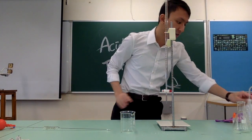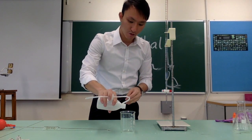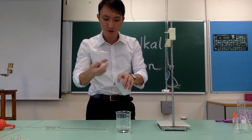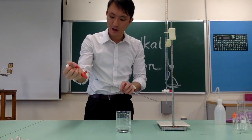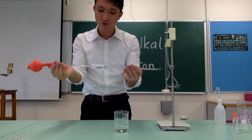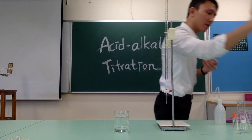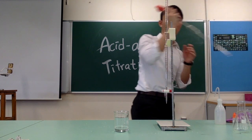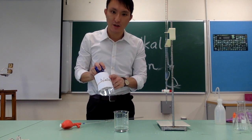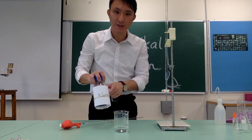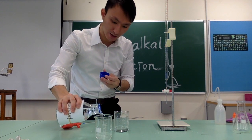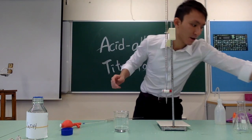Let's get started with the rinsing. First, take a beaker and add some distilled water. Roughly rinse the pipette, pour the distilled water out, then attach the pipette filler and suck up the solution. No need to add too much — gently roll the pipette and then discard the solution.